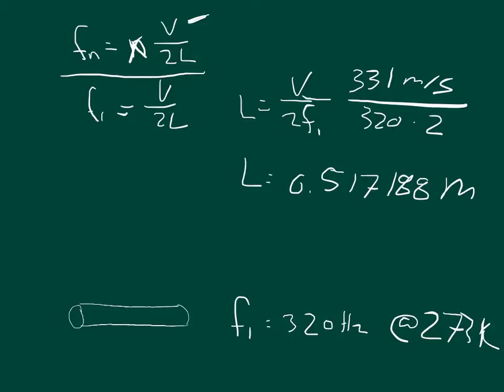So if we take our velocity is equal to 331 times the square root of the temperature divided by 273 Kelvin, so we need our temperature in Kelvin, and it says it's 30 Celsius which is 303 Kelvin.